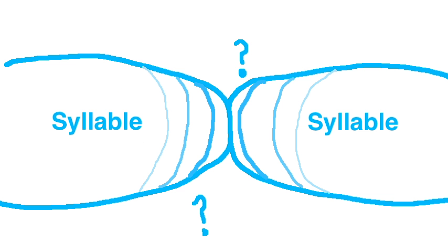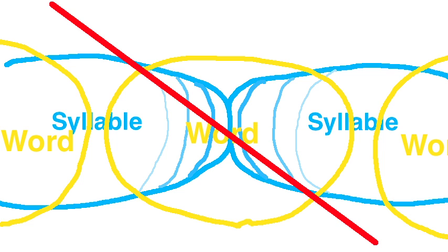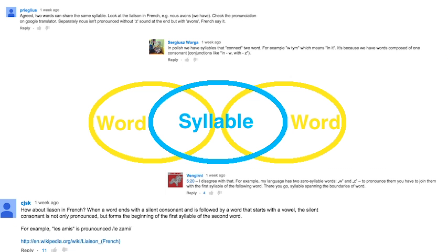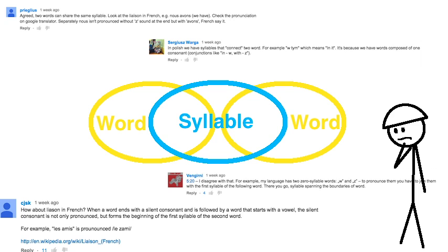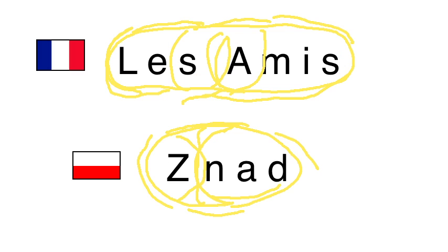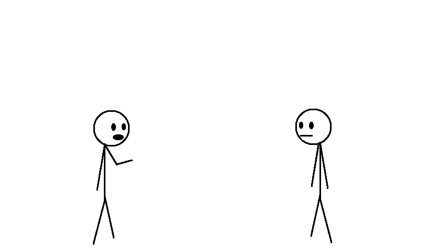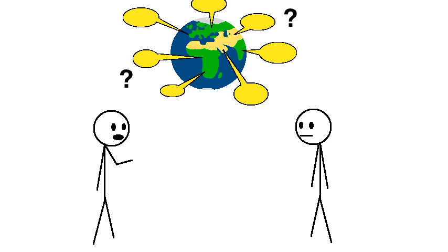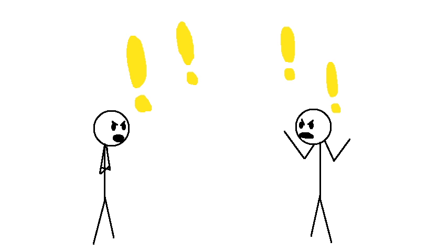In my last video, I talked about how one of the best ways to tell where syllable boundaries are is by taking advantage of the fact that syllables never span multiple words. In response, a lot of you brought up situations where syllables do appear to span multiple words, but all of your examples seem to me to be great demonstrations of the fact that what does and doesn't count as a word is really fuzzy. When you ask questions like where are their boundaries and are they even a universal feature of all languages, the answers are even more complicated and contentious for words than they are for syllables.